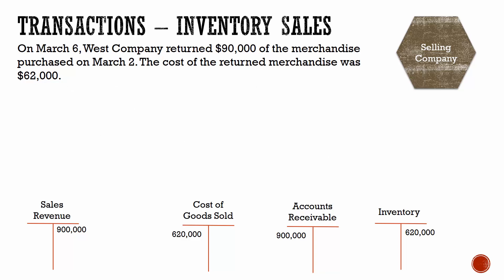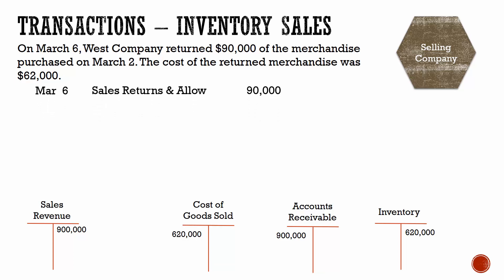Next, on March 6th, West Company returned $90,000 of merchandise. The cost of the returned merchandise was $62,000. So $90,000 of the merchandise that they bought from us is being returned. When we have a return, we debit an account called sales returns and allowances and credit accounts receivable, because they aren't going to pay us for something that they've returned.